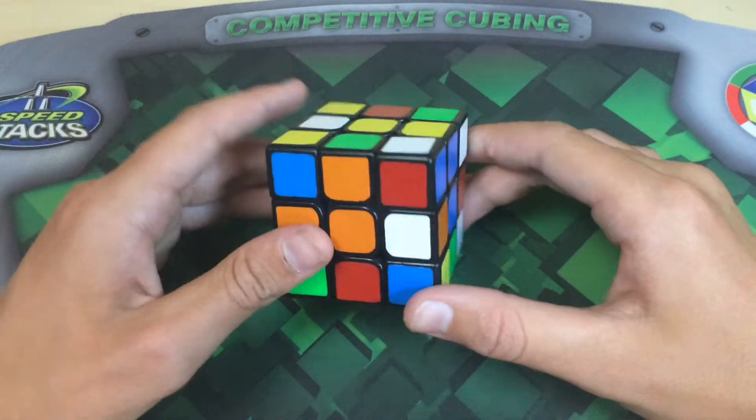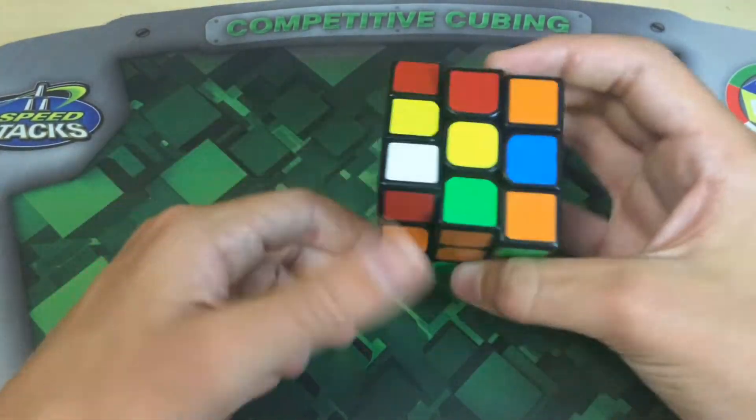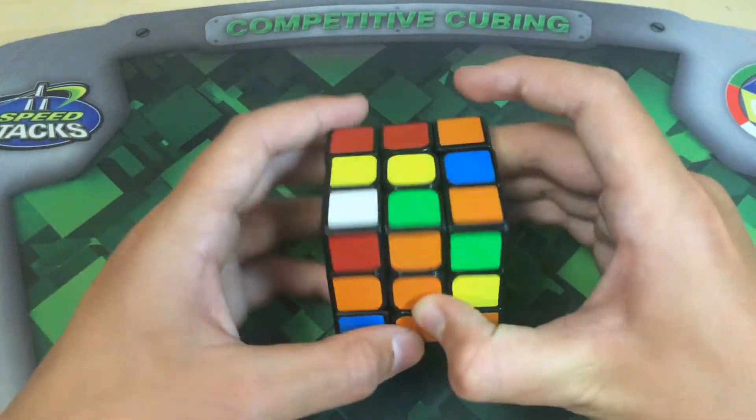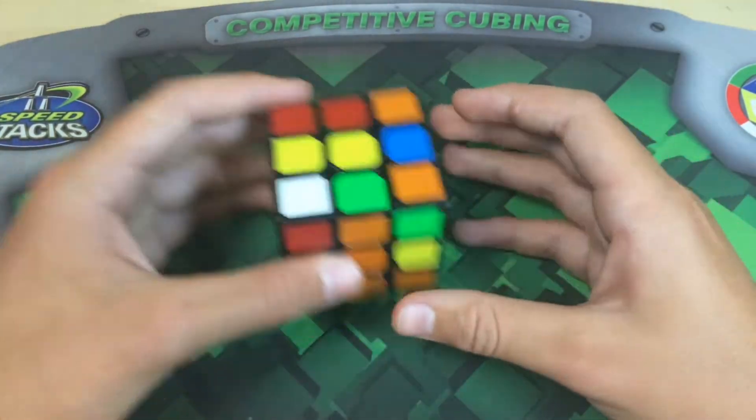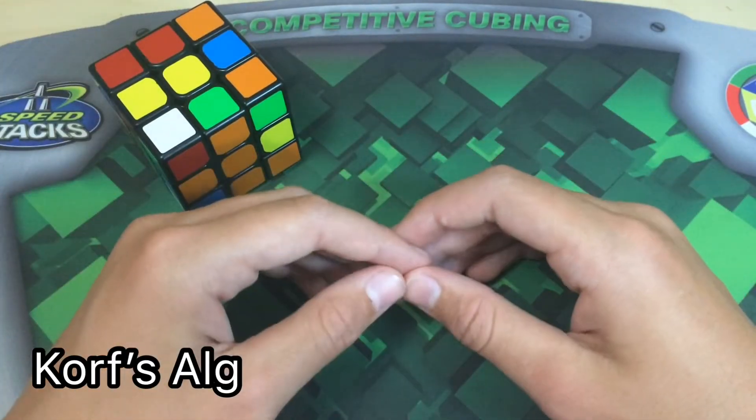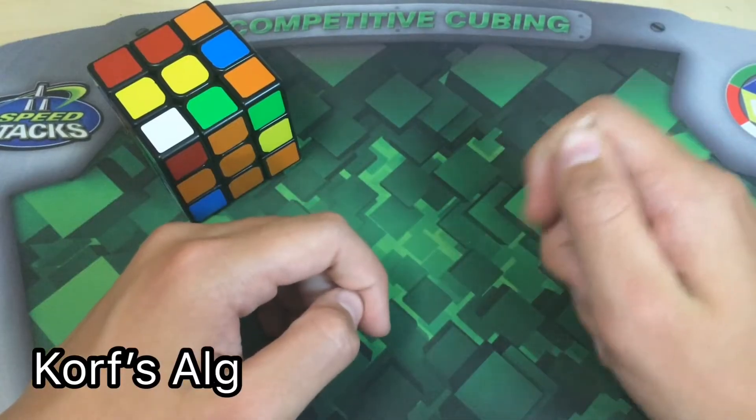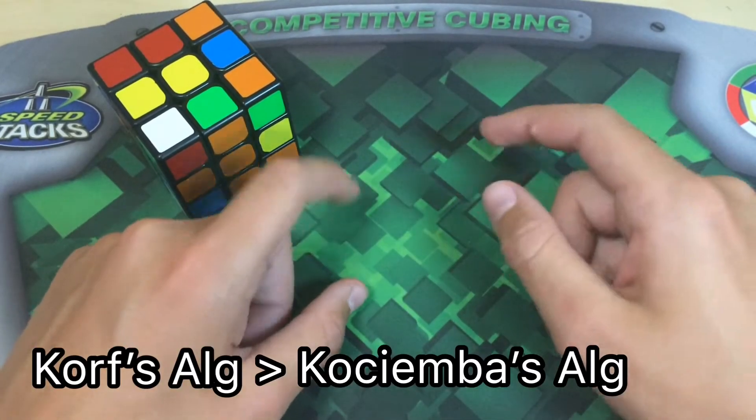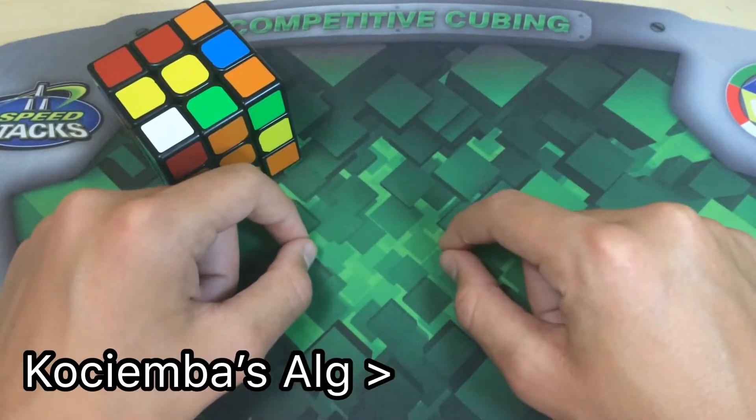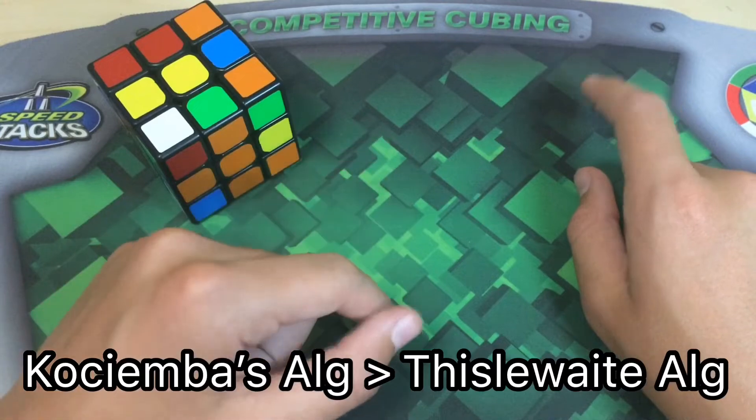The real first step is learning how a computer solves a Rubik's Cube. Computers don't use CFOP or Roux or anything like that. In fact, they use a completely different method called KORF's algorithm. KORF's algorithm is not possible to be performed by humans, but it is a more efficient variant of Cosiemba's algorithm, which is a more efficient version of the Thistleweight algorithm, which can be done by humans.